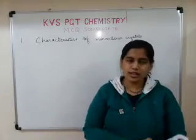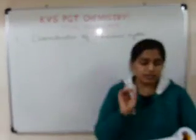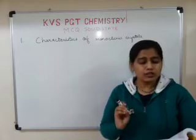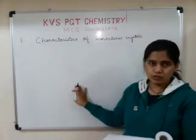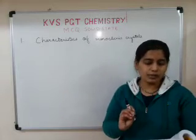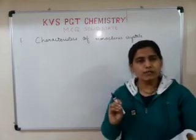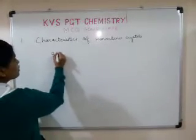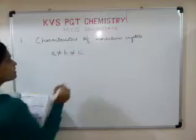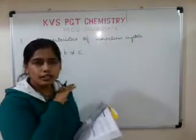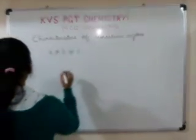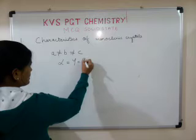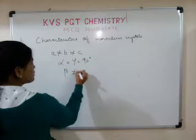The very first question is about the characteristic of the monoclinic sulphur system. Monoclinic sulphur is an example of a monoclinic crystal system. You have to tell the characteristics — edge lengths and bond angles alpha, beta, gamma are given as options. In the monoclinic system, all three sides are unequal. Alpha equals gamma equals 90 degrees, whereas beta is not equal to 90 degrees.